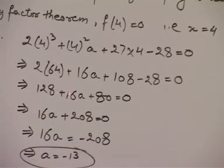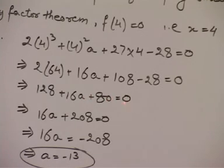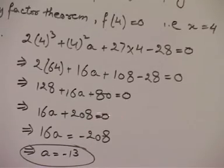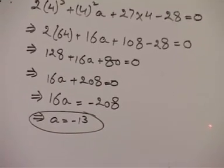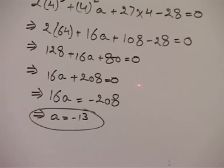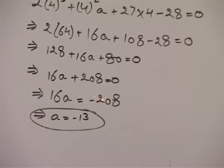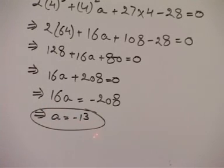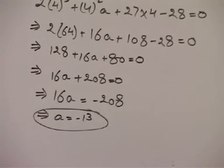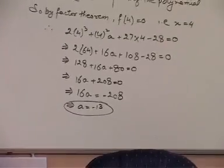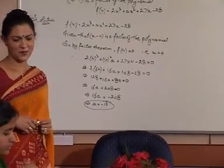Solving further, you get 128 + 16a + 80 = 0, so 16a + 208 = 0. Bringing 208 to the other side: 16a = -208. Solving, a = -13. So you have the value of a. Any doubts?